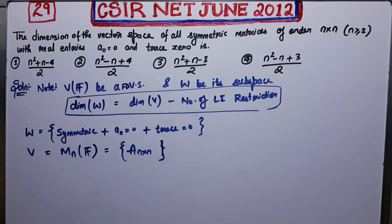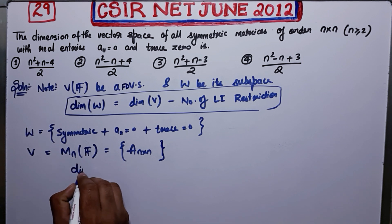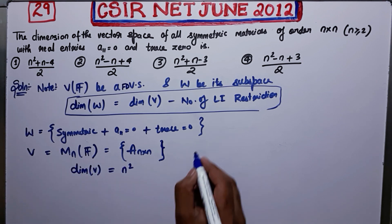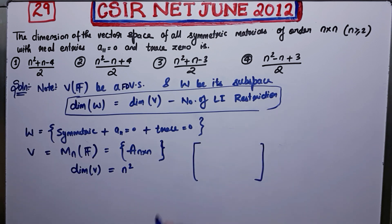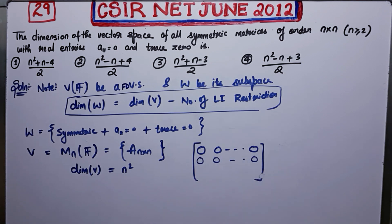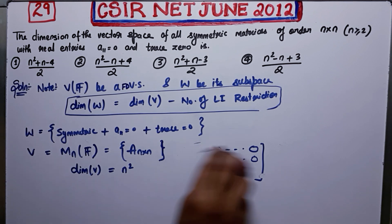For V = M_n(ℝ), the dimension is n². This is because in an n×n matrix, each individual entry can take its value independently — no entry depends on any other. So there are n² free variables, and therefore the dimension of V is n².